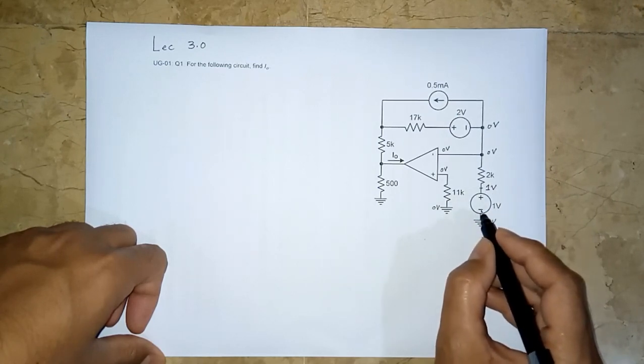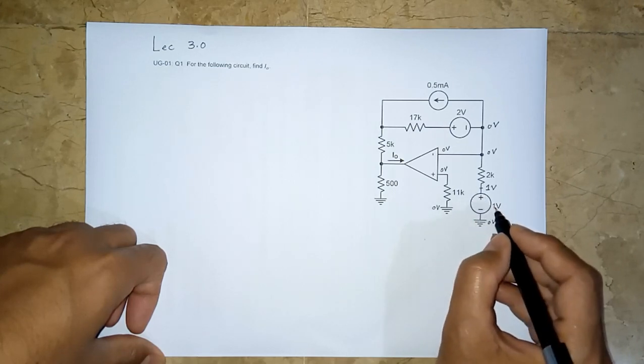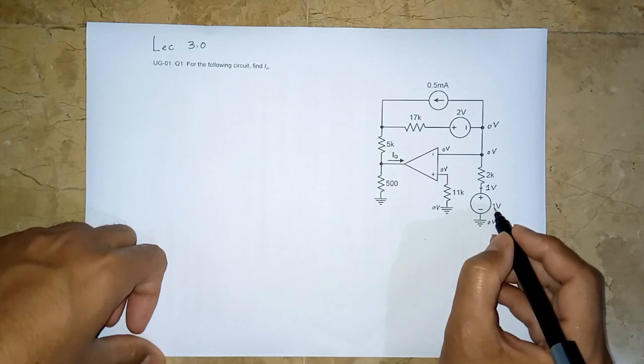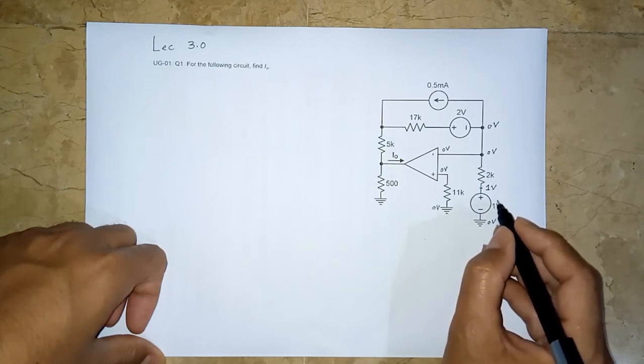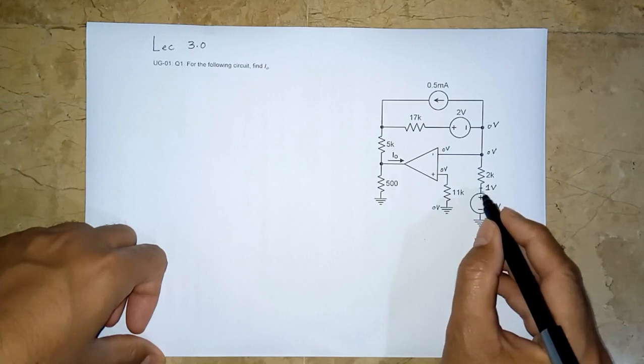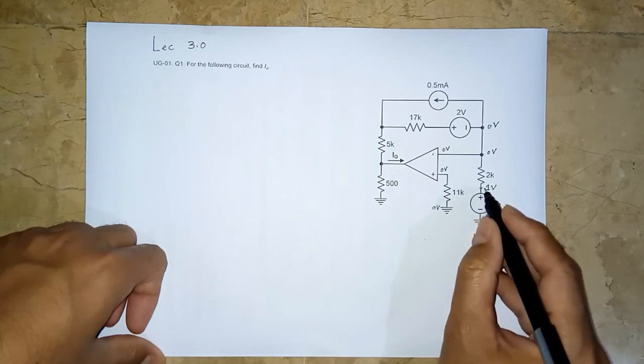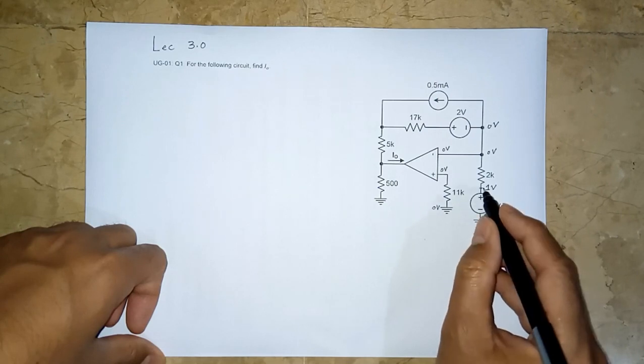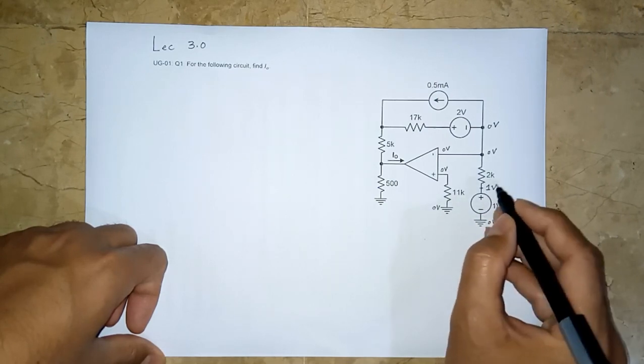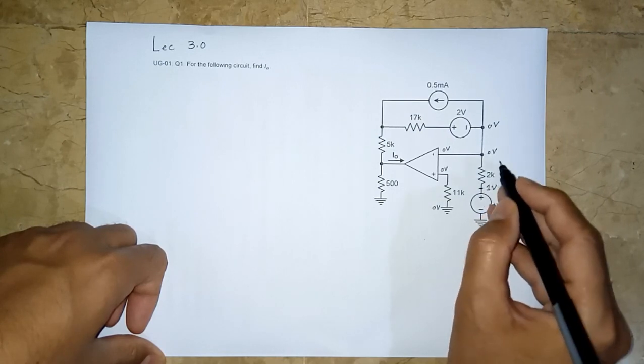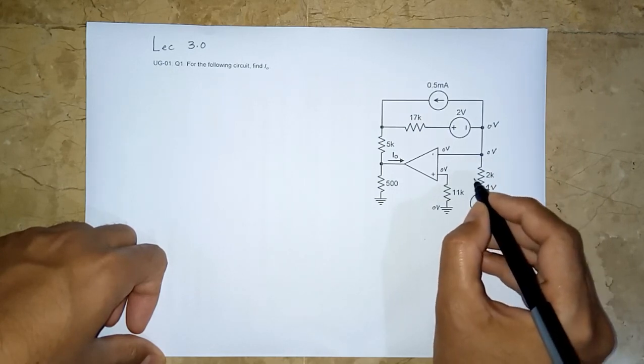This is a lower potential side of the voltage source. The higher potential side, therefore, would be one. This one volt basically says that one volt will be across this voltage source. So if we have zero here, it is one. If we had one here, it would be two. If we had minus one here, this would be zero. So this should be very clear.